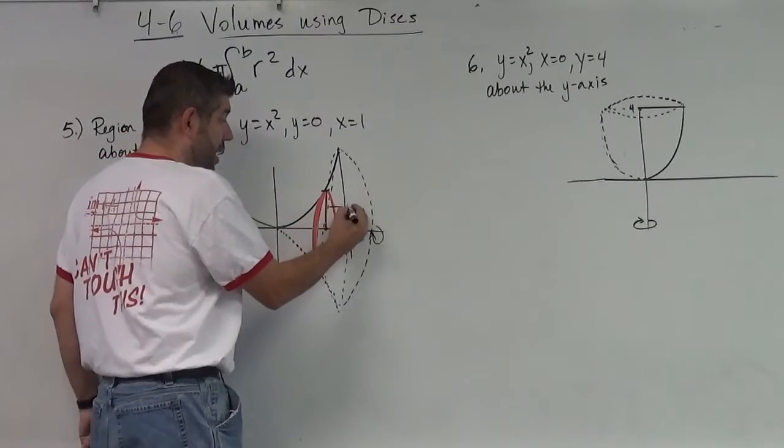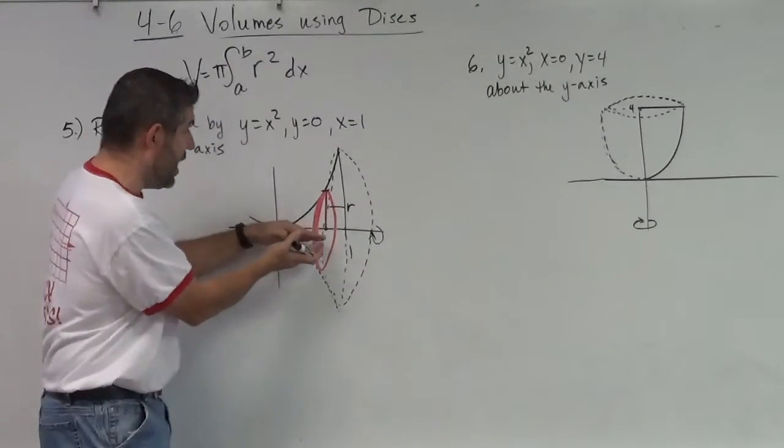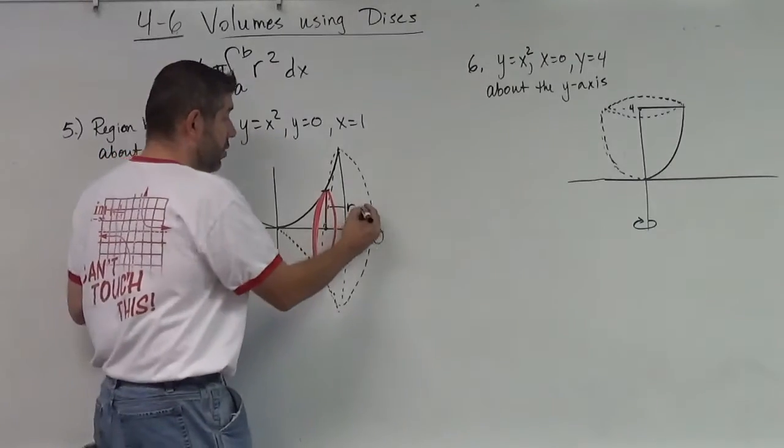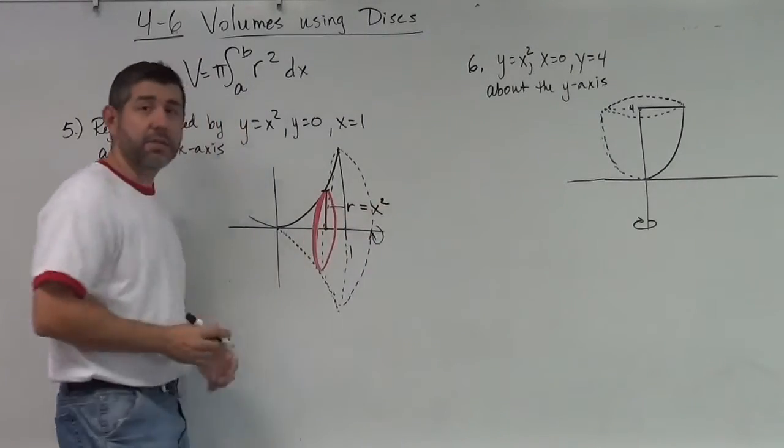So this radius, that's r. Well, what is that? That's from my x-axis to my function. So in this case, r is my function, x-squared.